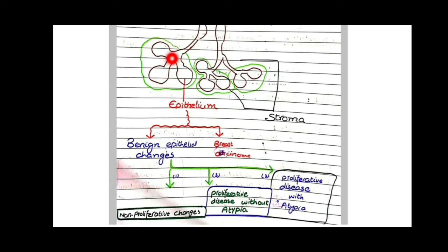Surrounding these epithelial structures is the connective tissue, which constitutes the stroma of the breast. So generally, the breast is composed of parenchyma (epithelium) and stroma.